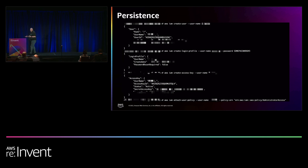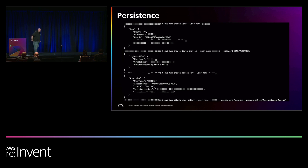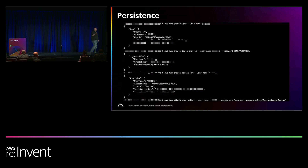Any thoughts on what AWS might have told me about this sequence of events so far? Up to when I created the user account, AWS logged nothing — or let me rephrase: AWS logged nothing from a security perspective that I would be looking at as a security person.